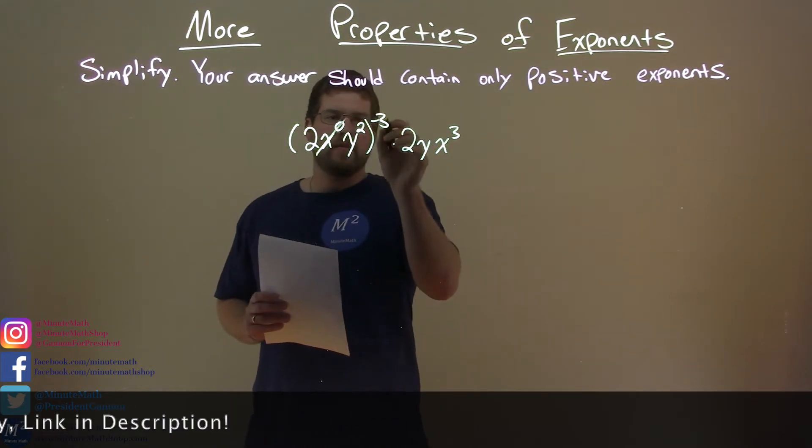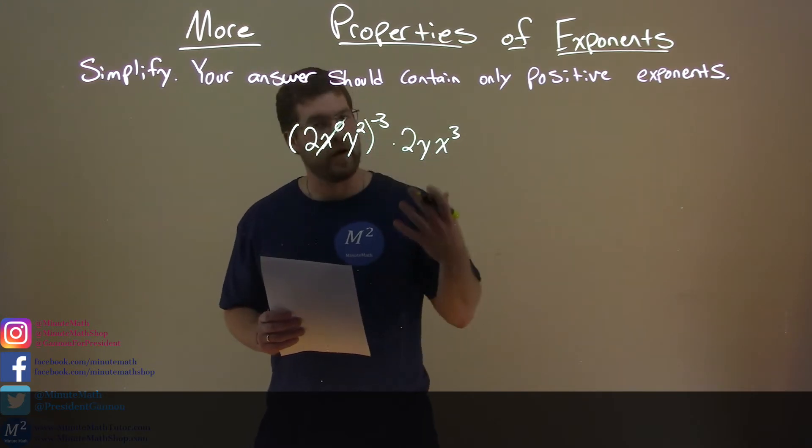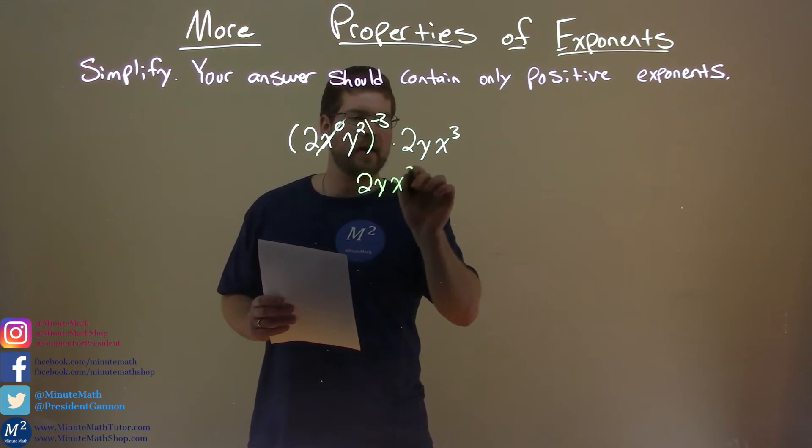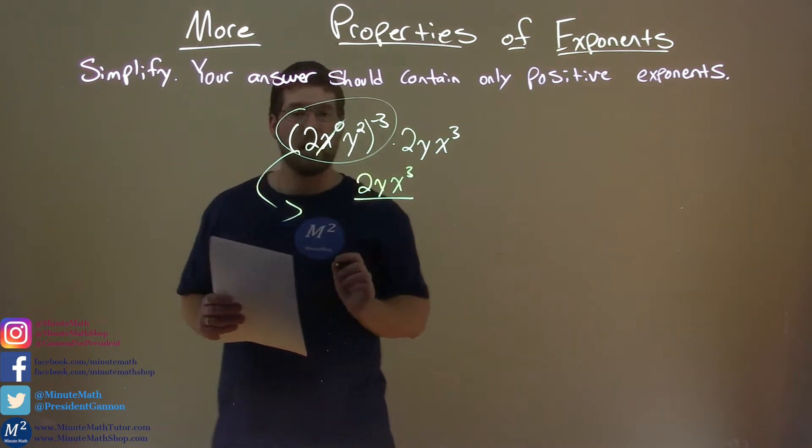This negative third power means that we can put this whole thing in the denominator but raised to a positive third power. So I'm going to take this part here, leave it in the numerator, 2yx to the third, but this part here is going to go down to the denominator.